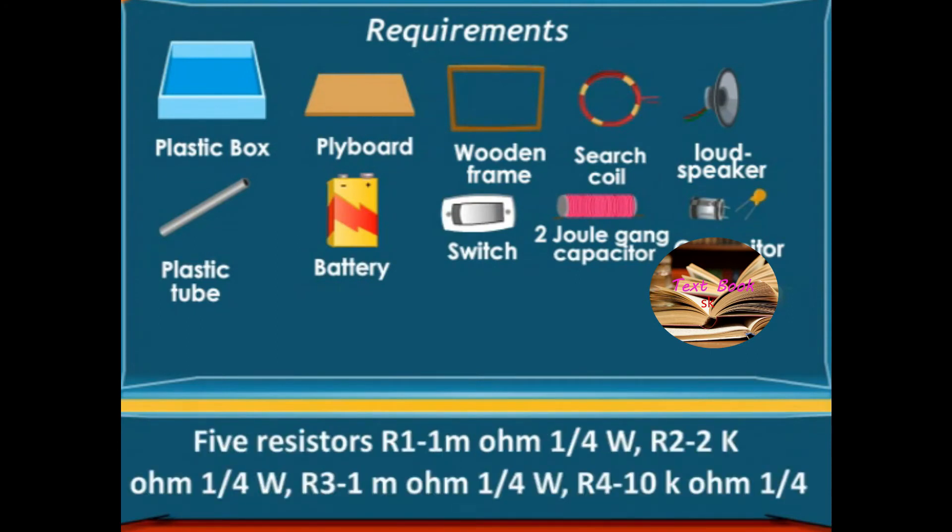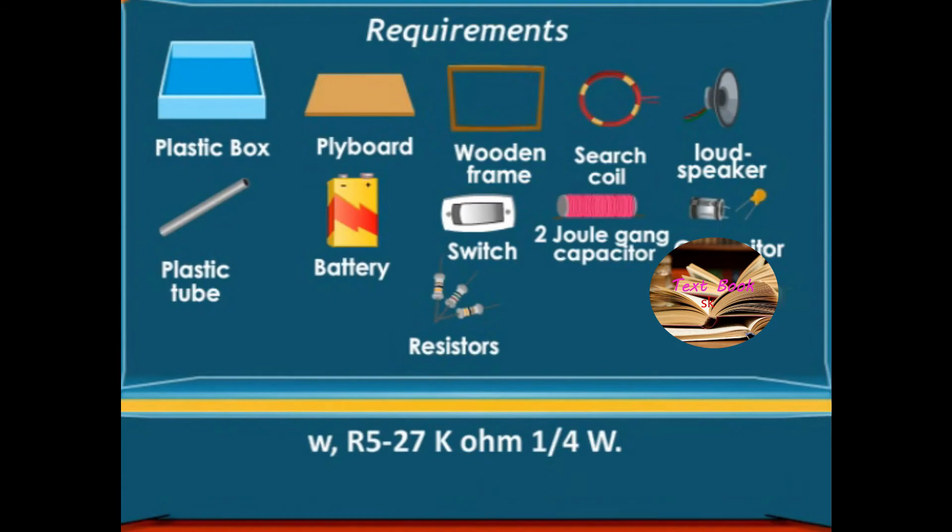5 resistors: R1: 1 megaohm quarter watt, R2: 2 kilo-ohm quarter watt, R3: 1 megaohm quarter watt, R4: 10 kilo-ohm quarter watt, R5: 27 kilo-ohm quarter watt.